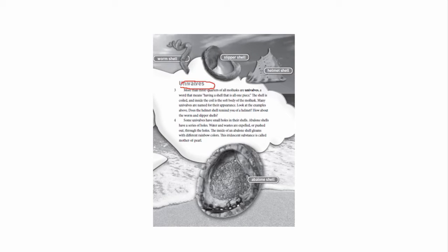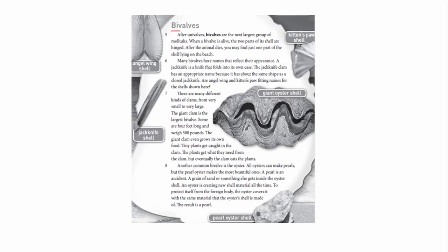The next page has the subheading Univalves. The author also presents photographs to help us understand what some of these mollusks look like — a worm shell, a slipper shell, a helmet shell, and an abalone shell. On the next page, the subheading is Bivalves. Through your reading, you should have read that bivalves are mollusks with shells in two parts. The author presents angel wing shells, the jackknife shell, the giant oyster shell, the kitten's paw shell, and the pearl oyster shell, with labeled photographs.